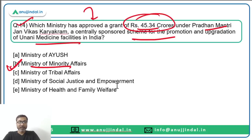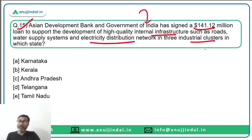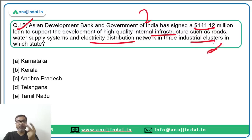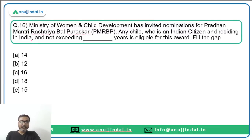Question fifteen: A bank — identified as the Asian Infrastructure Investment Bank — signed a 141.12 million dollar loan to support development of high quality internal infrastructure such as roads, water supply systems, and electricity distribution networks in three industrial clusters. The key things to remember are: which bank, the loan amount, the state, and the objective. The state is Andhra Pradesh, option C.